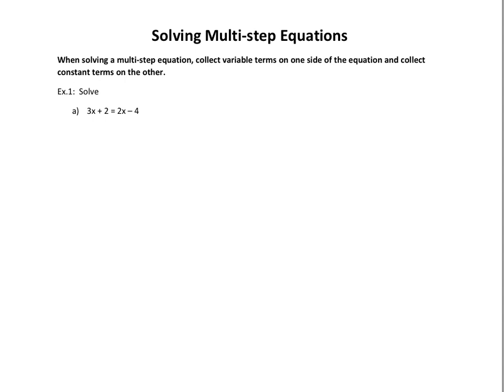Today we're going to take our equations one step further and look at what we call multi-step equations. The main thing is you're going to notice that we have variables on both the left-hand side and the right-hand side of the equation. Your main step is going to be to collect the variable terms on one side — we'll always do it on the left-hand side — and then put all constant terms on the other side.